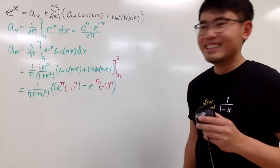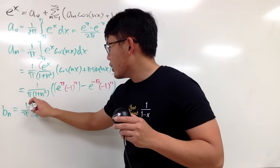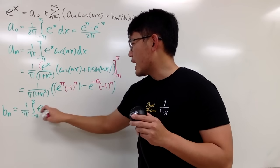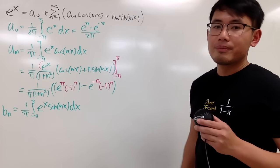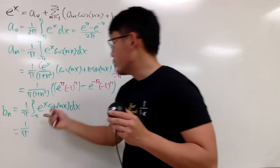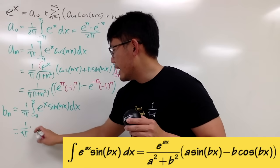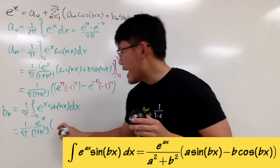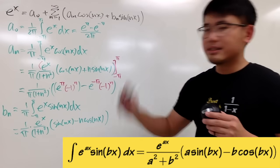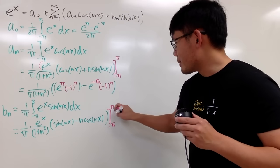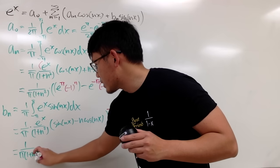Now let's work out bₙ. The formula is very similar: one over π, integrating from −π to π of e^x · sin(nx) dx, since bₙ pairs with sine(nx). After integrating — you can watch my previous video or try integration by parts using complex numbers — the antiderivative is e^x over (1 + n²) times [sin(nx) − n·cos(nx)], evaluated from −π to π.